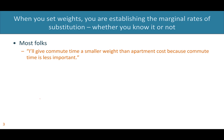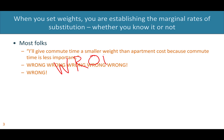Most folks would say something like, I'll give commute time a smaller weight than apartment cost, because commute time is less important. That makes intuitive sense and I totally get why people say that. Unfortunately, it's wrong. Despite how intuitive it sounds, this statement is incorrect.